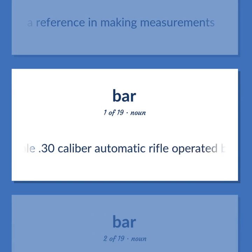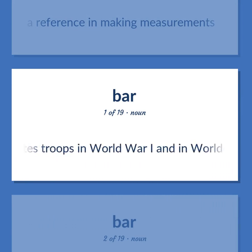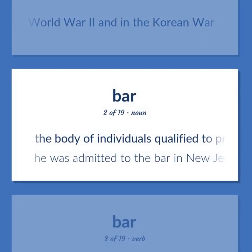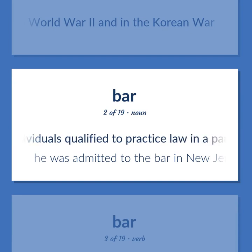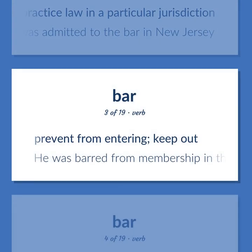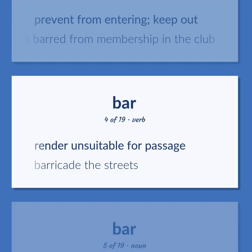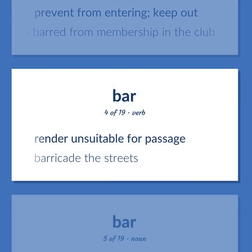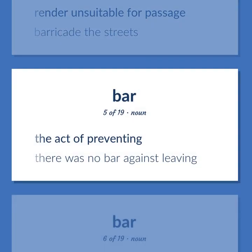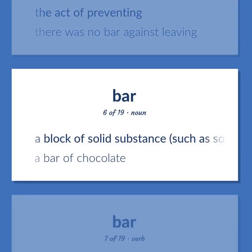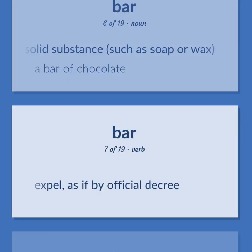Bar: A portable .30 caliber automatic rifle operated by gas pressure and fed by cartridges from a magazine, used by United States troops in World War I, World War II, and the Korean War. The body of individuals qualified to practice law in a particular jurisdiction; he was admitted to the bar in New Jersey. Prevent from entering; keep out; he was barred from membership in the club. Render unsuitable for passage; barricade the streets. The act of preventing; there was no bar against leaving. A block of solid substance, such as soap or wax; a bar of chocolate. Expel, as if by official decree.